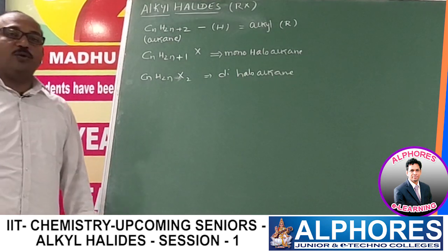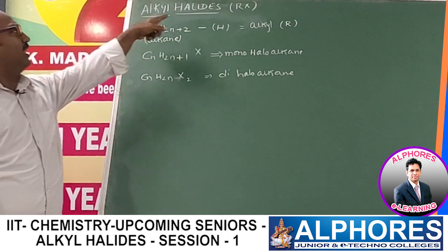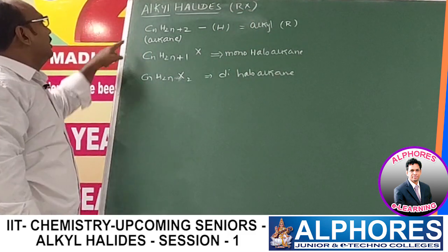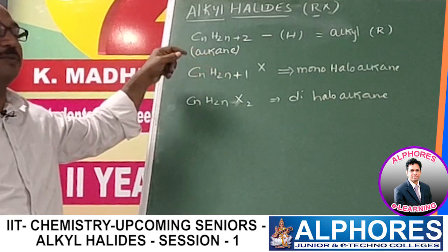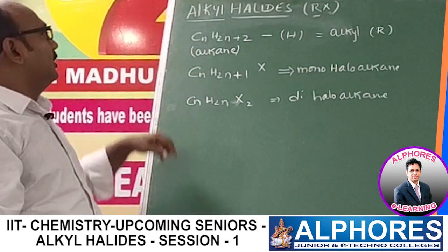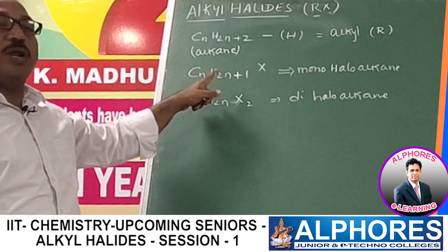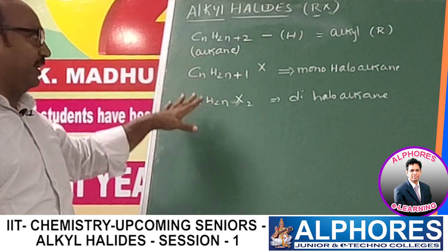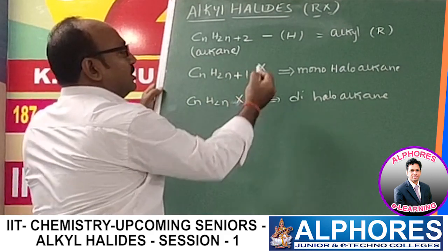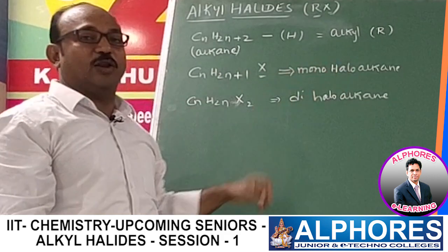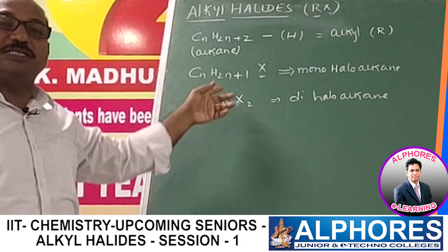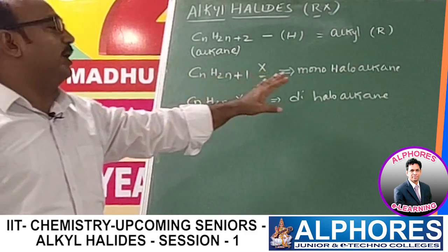Today we are going to discuss alkyl halides. Alkyl halides are generally represented as RX, where R is an alkyl group and X is a halogen. From the alkane general formula CnH2n+2, if we remove a hydrogen, the resultant group is called the alkyl group, indicated as R. Compounds in which one or more hydrogens of alkanes are replaced by halogen atoms are called alkyl halides. CnH2n+1X represents a monohaloalkane, CnH2nX2 a dihaloalkane, and similarly trihalo and polyhaloalkanes.